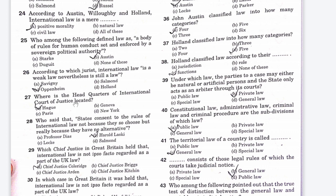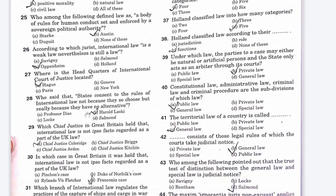The next question: who said that states consent to the rules of international law not because they choose to do so, but really because they have no alternative? Option A is Professor Dicey, Option B is Harold Laski, Option C is Locke, Option D is Salmond. The right answer is Option B, Laski.